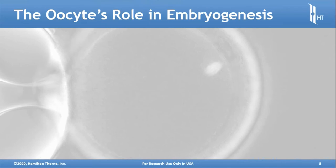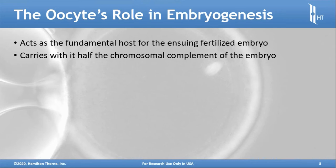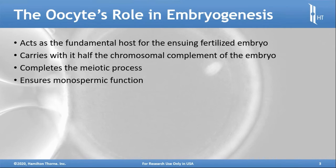The oocyte's role in embryogenesis is no doubt important. It acts as the fundamental host for ensuring a fertilized embryo can properly divide. It carries with it half the chromosomal complement of the embryo — the maternal complement. It completes the meiotic process and ensures monospermic function.